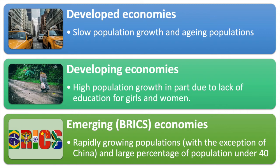The emerging economies typically experience rapidly growing populations, with the exception of China due to the one-child policy, which has only been changed in recent years to address the problem. India's children born per woman ratio has fallen to 2.22 in 2018 from 5.9 in 1960.